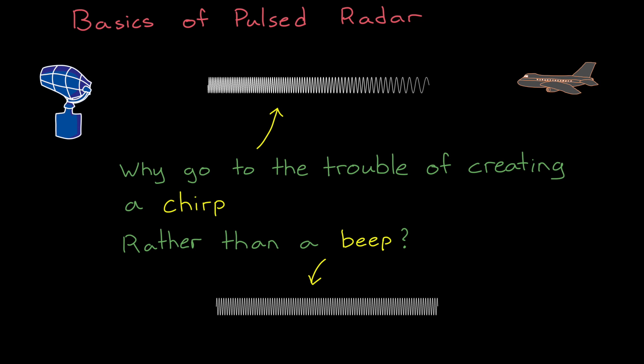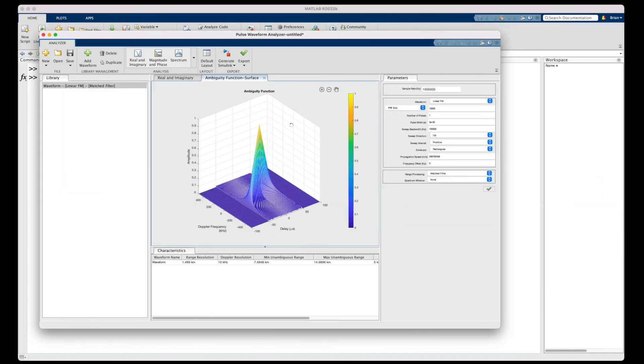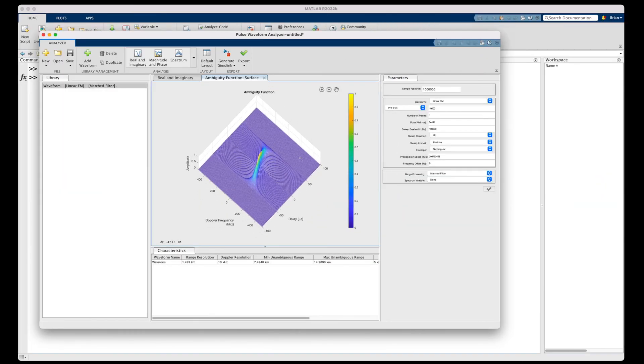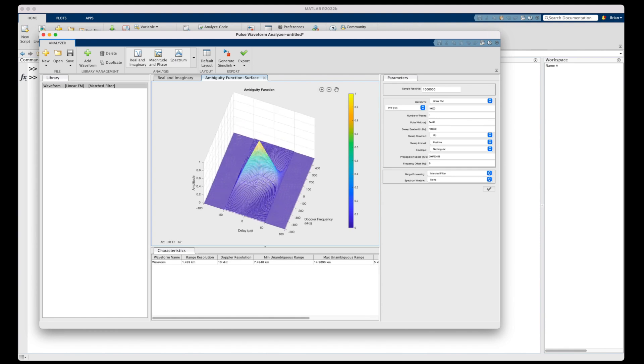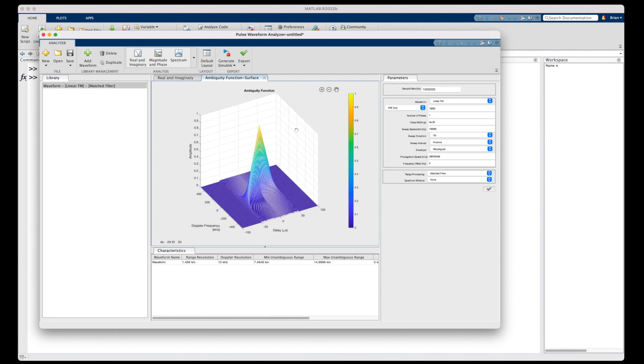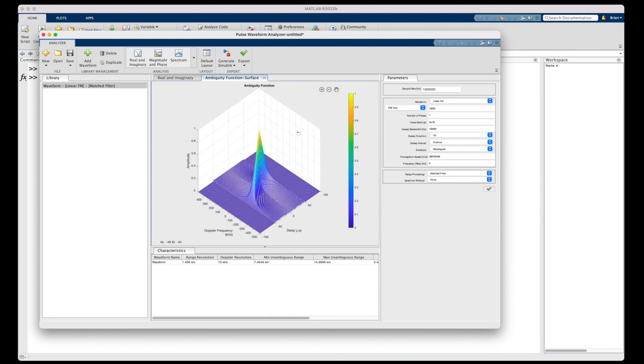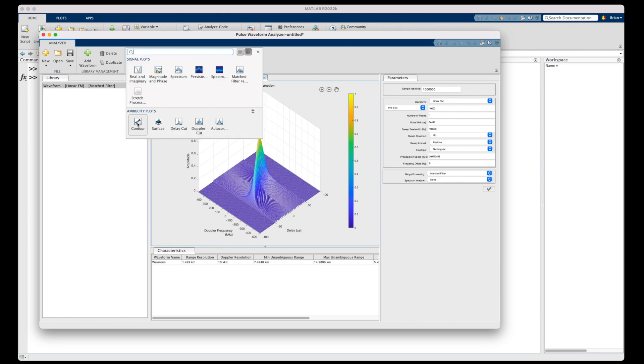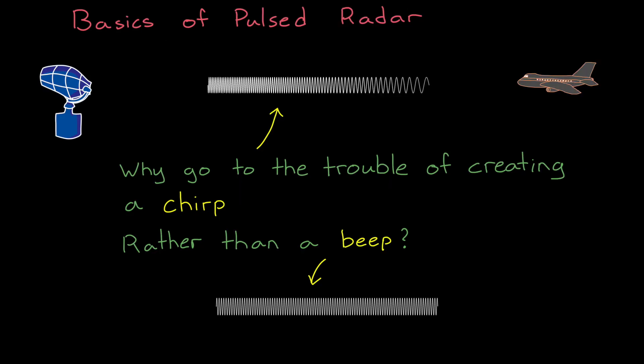And to answer this question, we're going to create the ambiguity diagram for both of these pulse waveforms. This diagram provides a way for us to visualize how our choice of waveform affects our ability to measure range and Doppler of an object. And what we're going to find is that there is a lot less ambiguity if we use a linear frequency modulated waveform rather than a rectangular one.